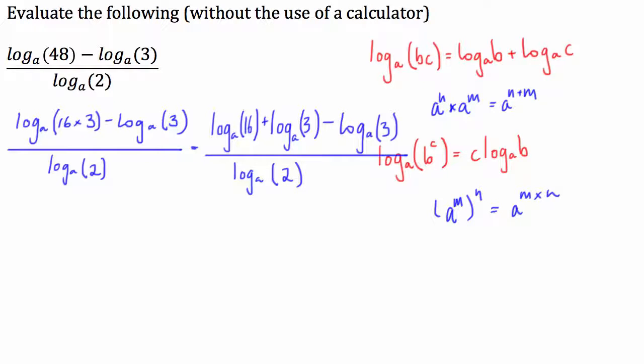So you can see here that we've got plus log a to the 3 minus log a to the 3, so naturally they will just sum to 0. So what we're left with is log to the base a of 16 divided by log to the base a of 2.